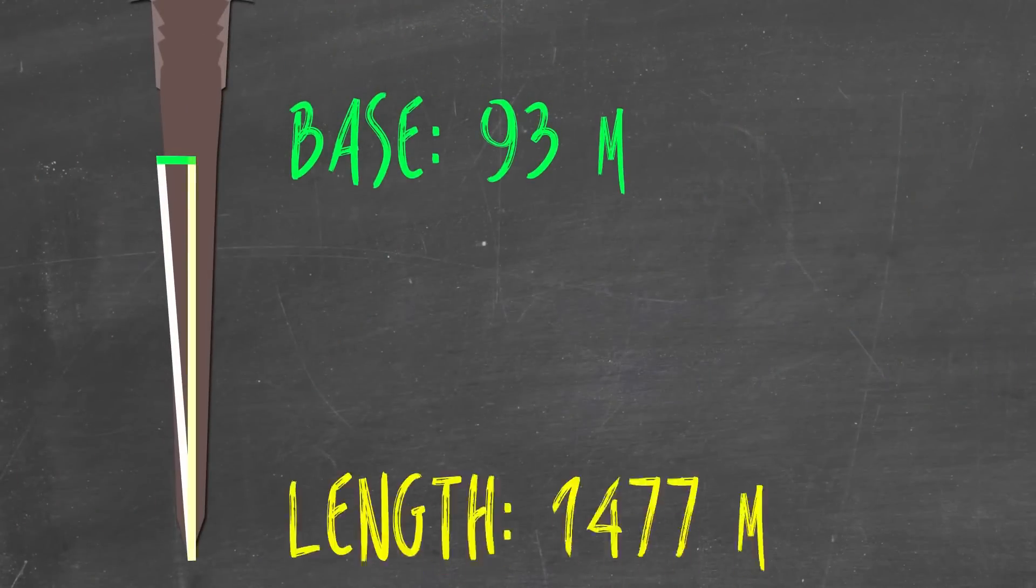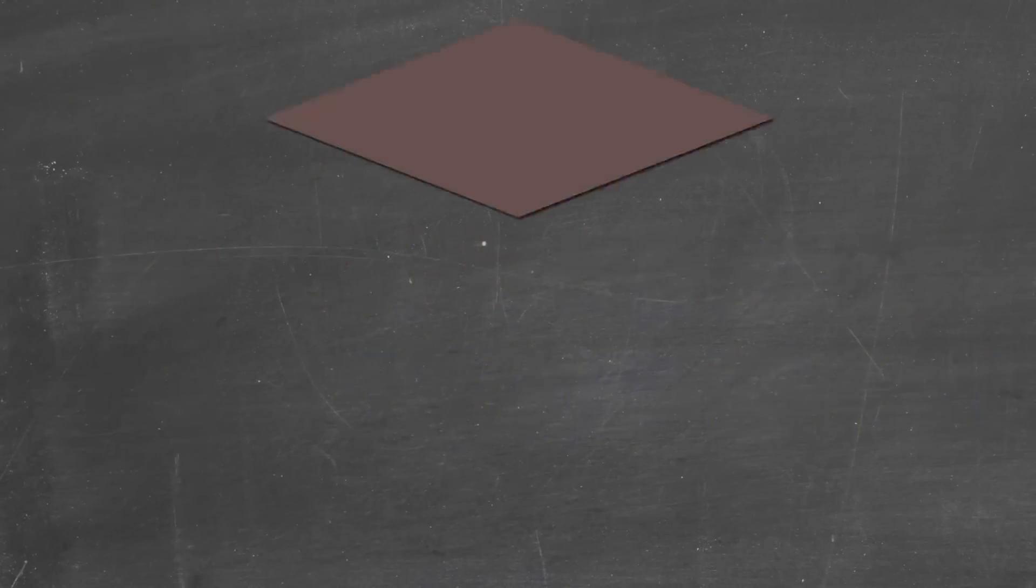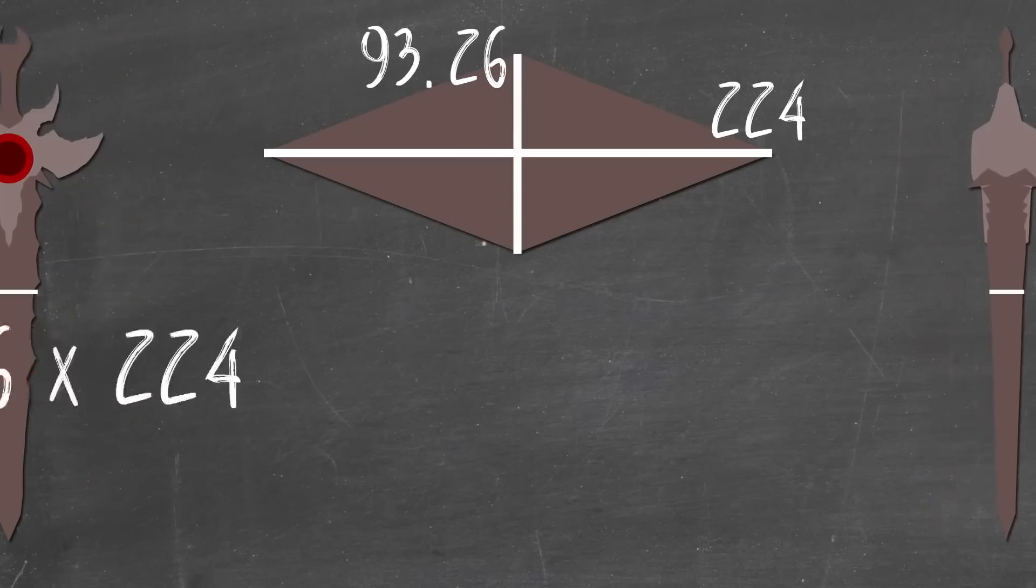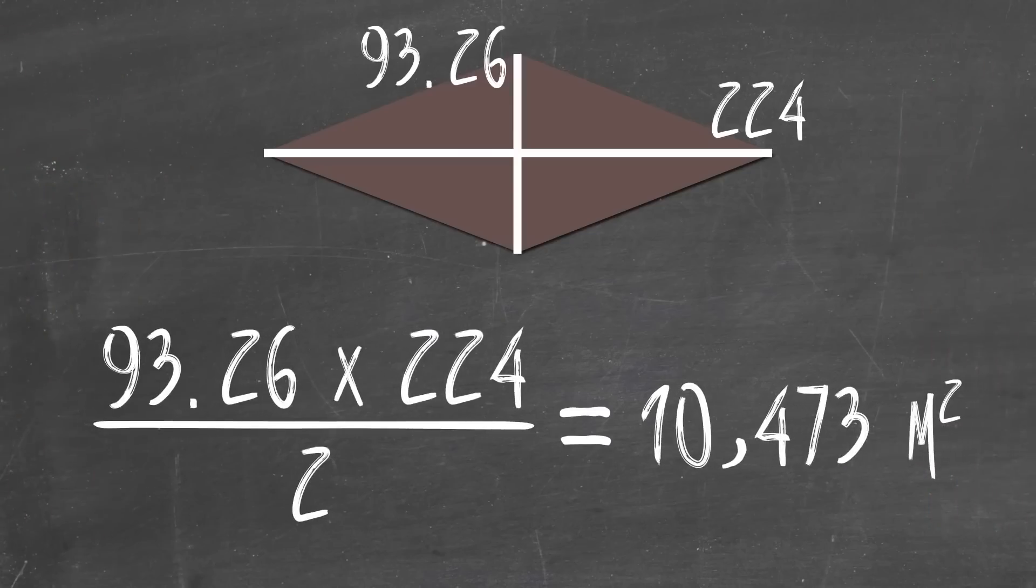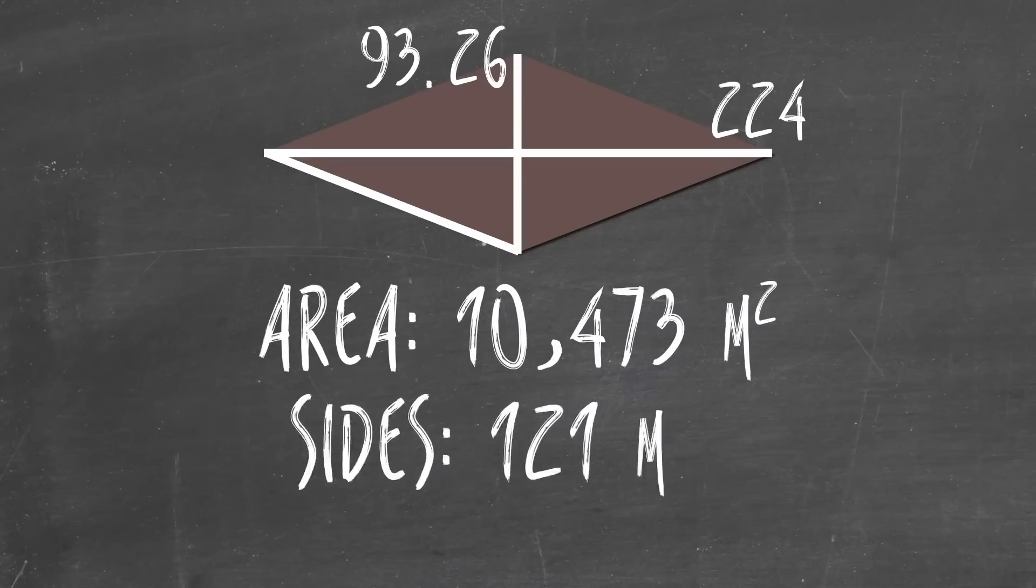Cross-section two is the exact same math as cross-section one, but with different numbers, which gives us a base of 93. Divide by two, Pythagoras, bam! These sides are 1,478 meters. One more cross-section to go! Looking down on the sword, you can see that we've already figured out these diagonals. This is the base of cross-section one, and this is the base of cross-section two, which we can multiply together and divide by two to get the area. 10,473 square meters, and we can use the Pythagorean theorem again to get the sides, 121 meters! Woo! Done with the dimension of the sword! Woo-hoo!